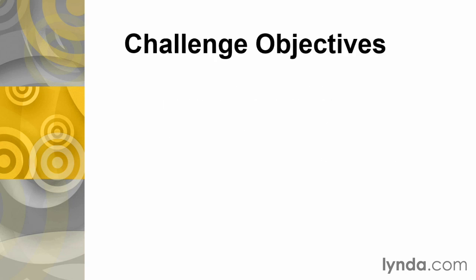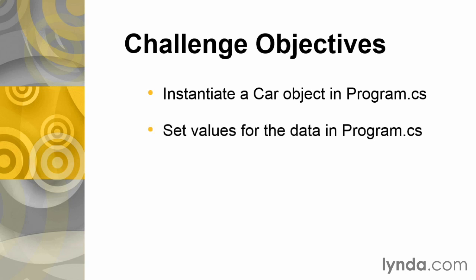And once you have your class created, you'll switch to your program.cs file, instantiate a new car object, give it a name of your choosing. You'll set values for the data within that program.cs file.